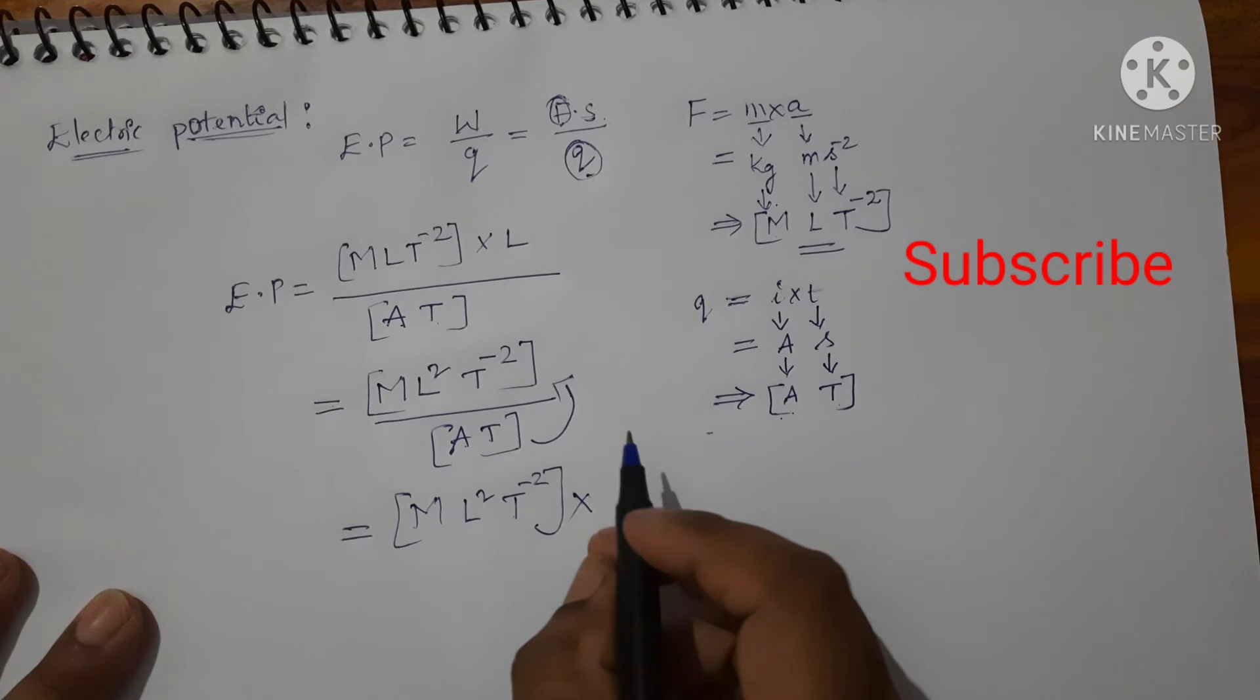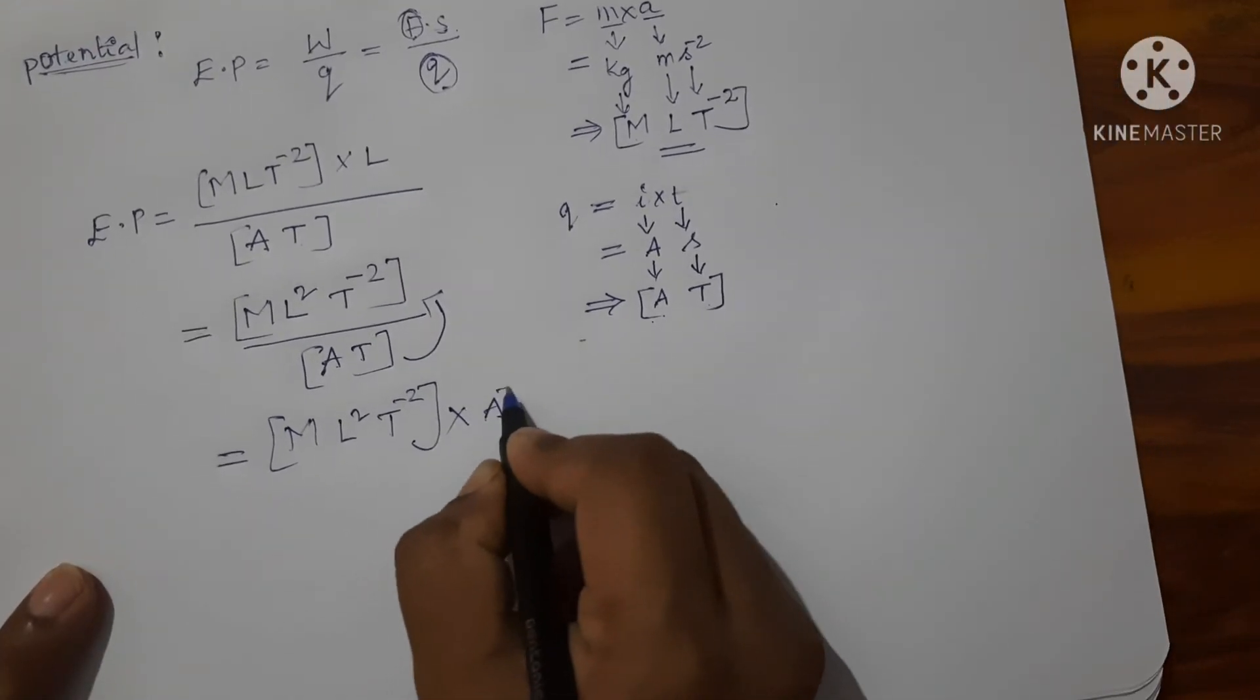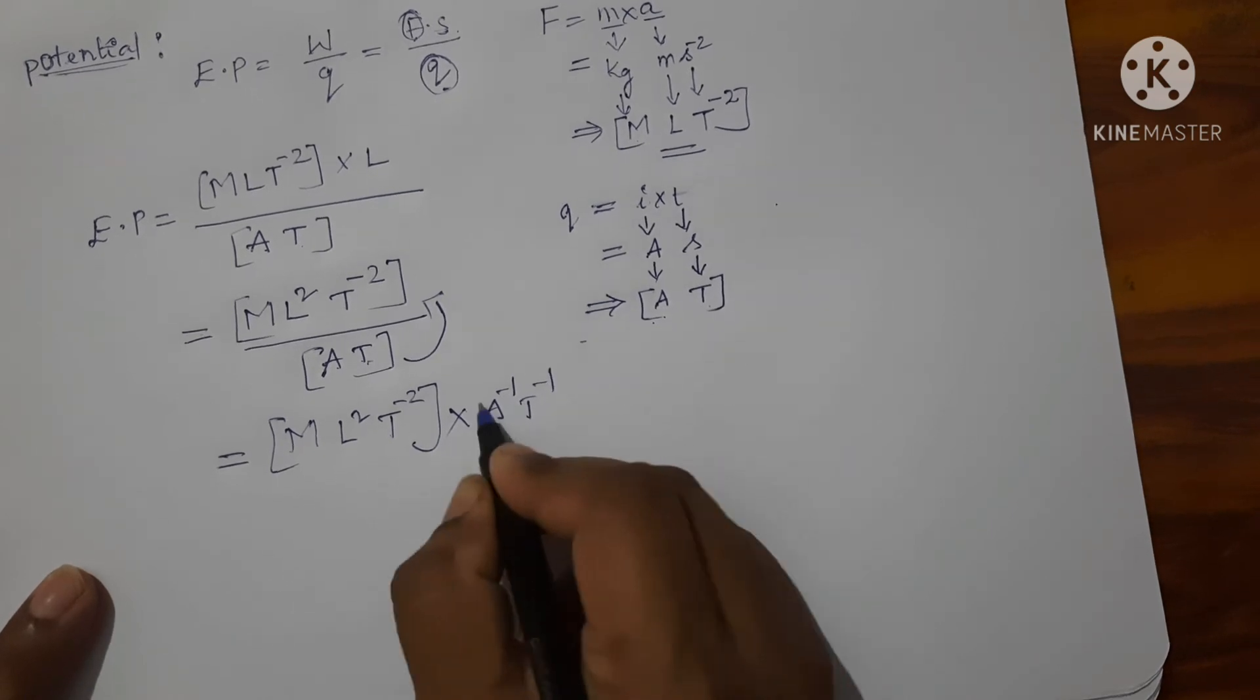This I am writing on the numerator, which will be equal to A power minus 1 and T power minus 1.